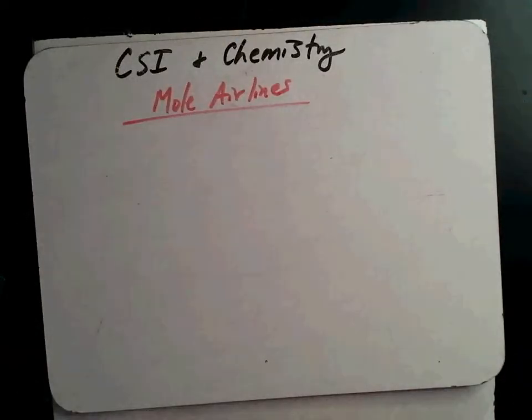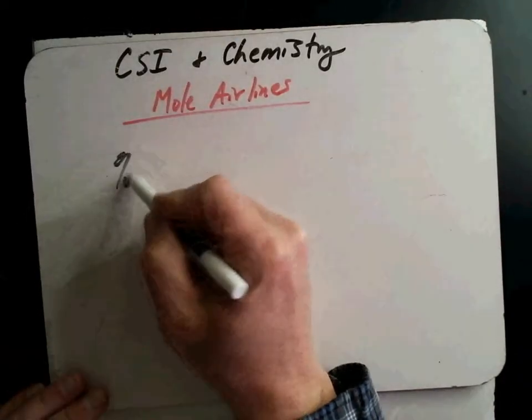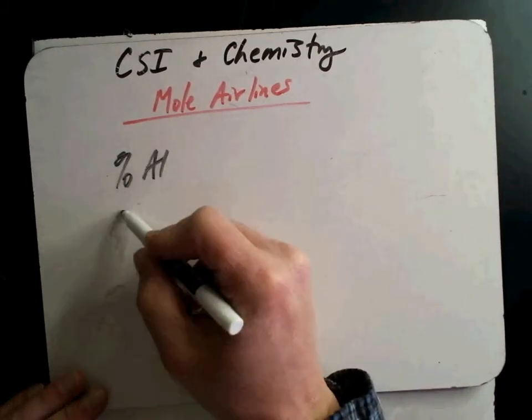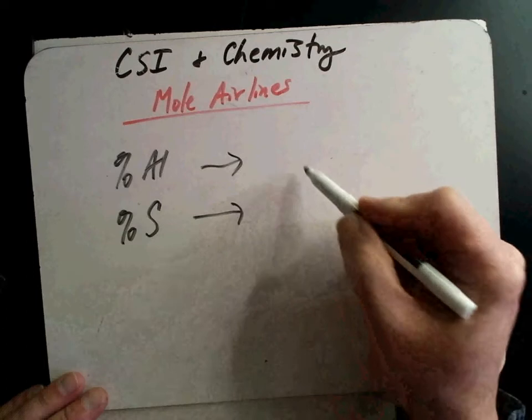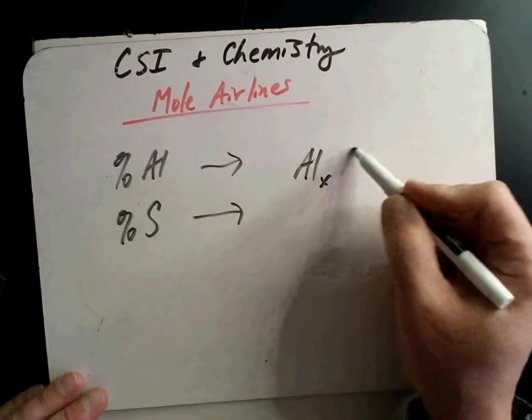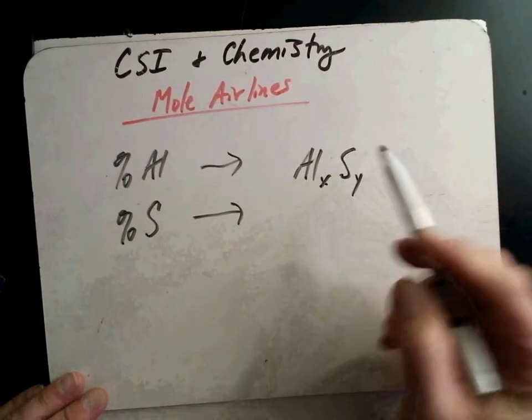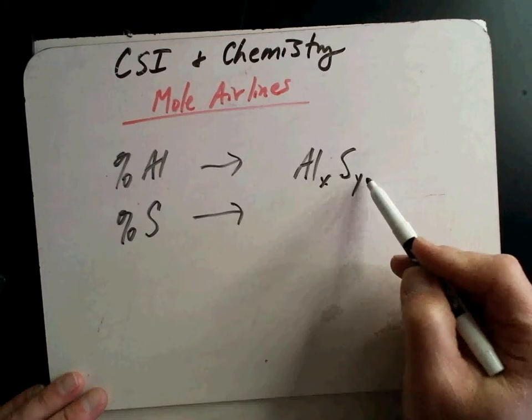So reminder, when you go to work these problems, you're going to have percents of compounds. Then you're going to convert those into some kind of formula, like something with Al and S, and you'll figure that out pretty simply. You figure out the empirical formula.